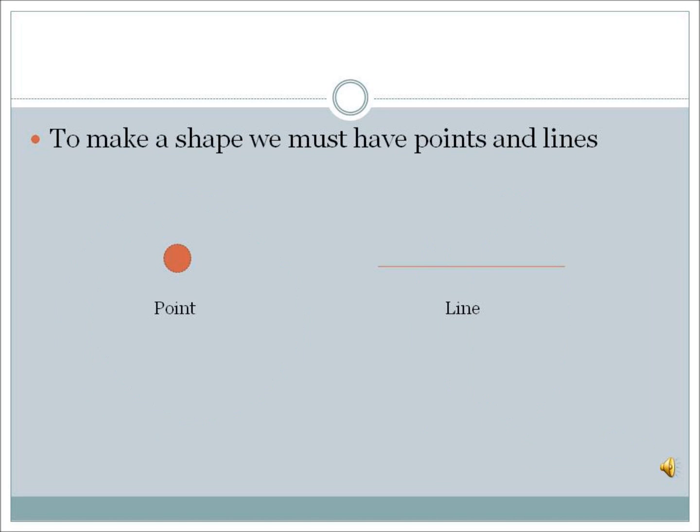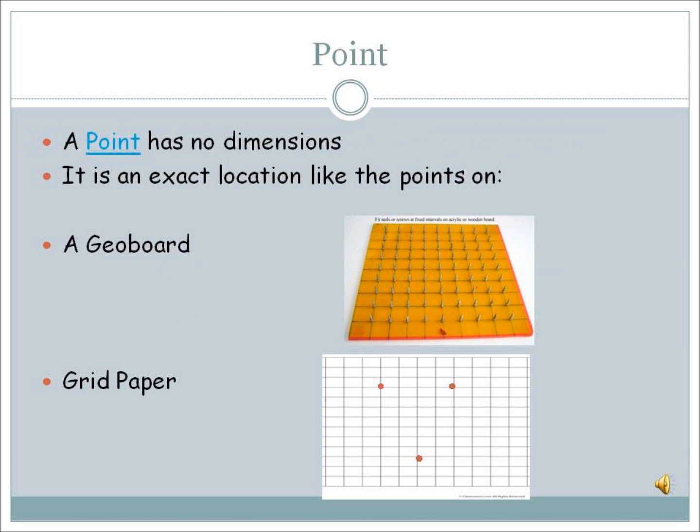To make a shape, we must have points and lines. A point has no dimensions. It is an exact location like the point on a geoboard or on grid paper.